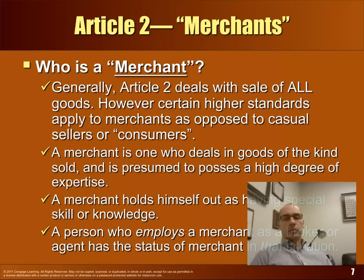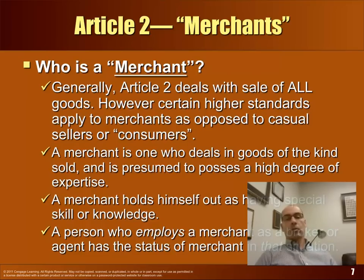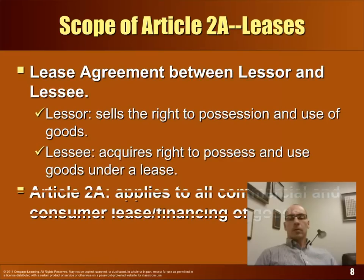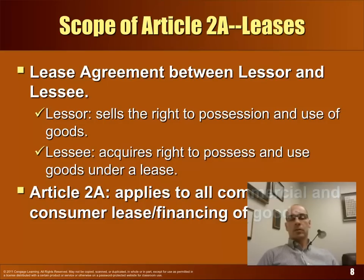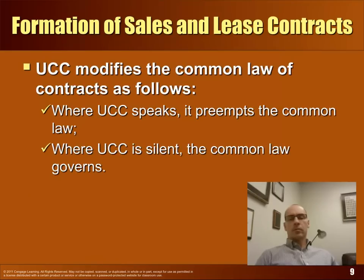What's a merchant? A merchant is defined in Article 2 as somebody who holds themselves out to be a merchant, or somebody who regularly deals in those type of goods or has special skills in that area, or even someone who employs someone — so a clerk at a major retail outlet is considered an agent and also a merchant for purposes of the UCC. Article 2A covers leases — a lease agreement between a lessor and a lessee for goods, covering all commercial, consumer leases or financing of goods. A lot of the provisions of 2A look just like Article 2.